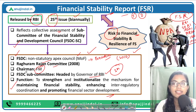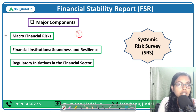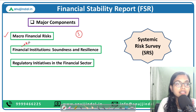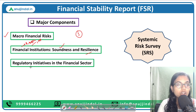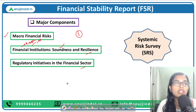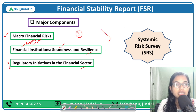The entire Financial Stability Report is classified into three major parts. First, it talks about the macro financial risk — risk of a financial nature at the macro level. Second, it talks about financial institutions such as banks, NBFCs, and mutual funds — their soundness and resilience. Third, it talks about the regulatory initiatives in the financial sector — what all initiatives are being taken by RBI, SEBI, the insurance sector, and the pension sector.